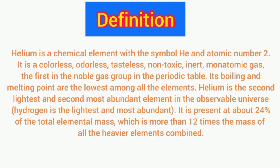Helium is a chemical element with the symbol He and atomic number two. It is a colorless, odorless, tasteless, non-toxic, inert monoatomic gas — the first in the noble gas group in the periodic table. Its boiling point and melting point are the lowest among all the elements.